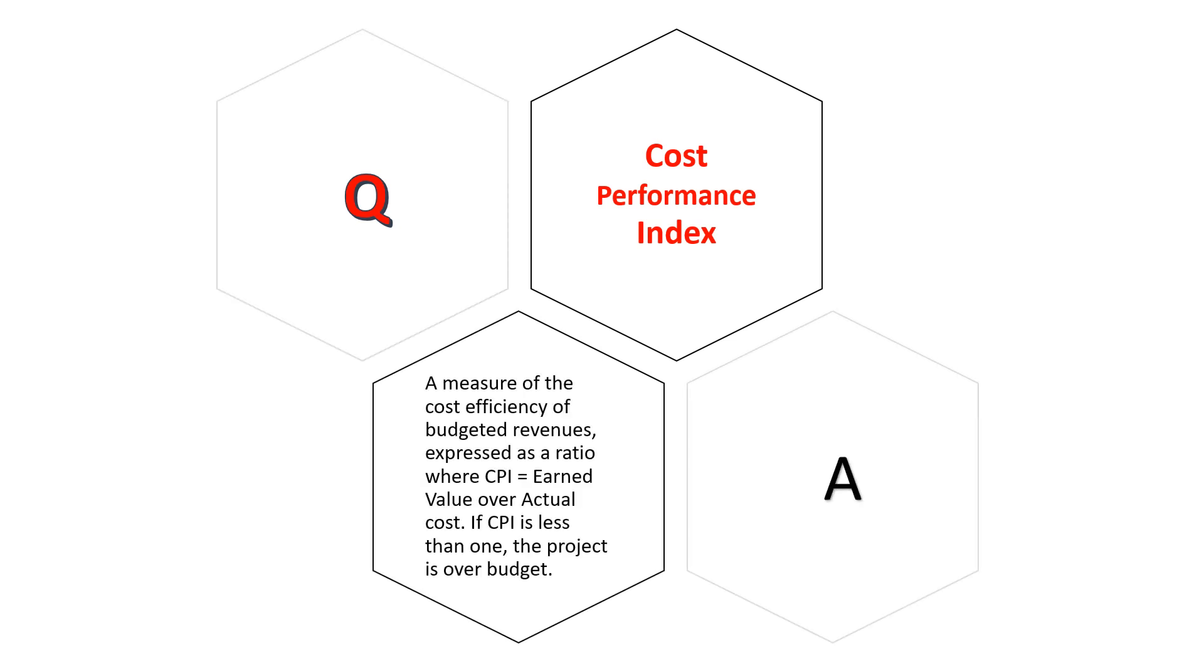Cost Performance Index: A measure of the cost efficiency of budgeted revenues, expressed as a ratio where CPI equals earned value over actual cost. If CPI is less than 1, the project is over budget.